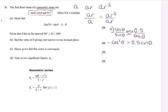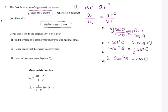Now we want everything in sine, so I'm going to replace cos squared with 1 minus sine squared. And now I'm going to multiply everything by 2. Then I move everything to one side and I've got my solution there.